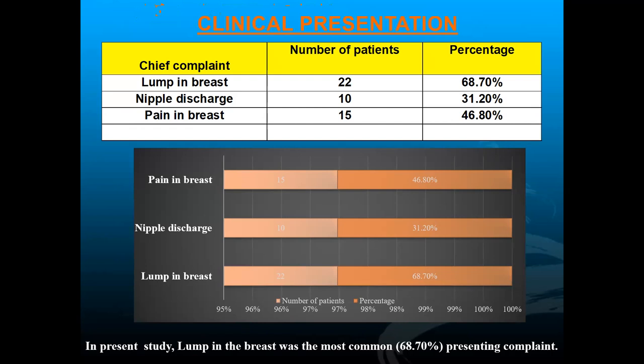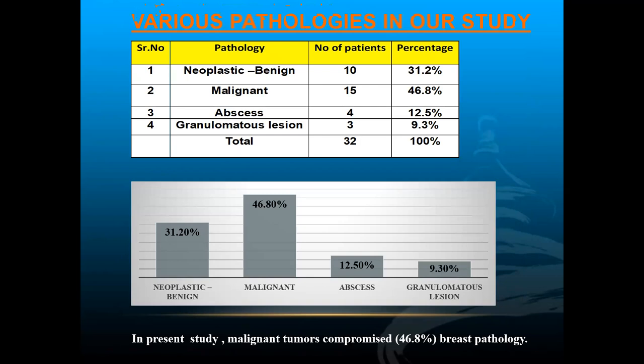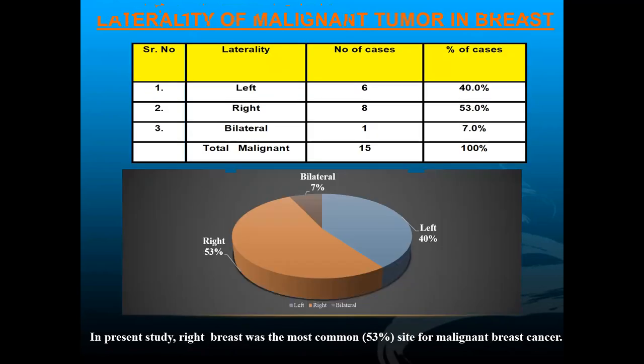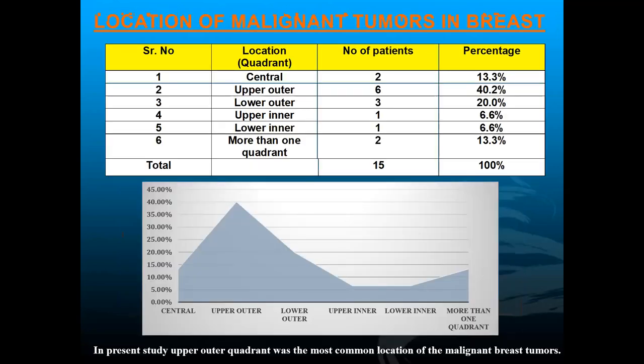Regarding the various pathologies detected in the study: the most common were malignant lesions — 15 patients, constituting 46% — followed by benign lesions at 31%. Laterality-wise, most patients presented with lesions in the right breast. Among malignant patients, 53% had right-sided lesions. The most common location for malignant lesions was the upper outer quadrant — 6 patients, constituting 40% of malignant tumors.